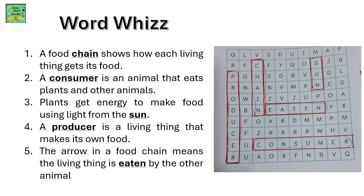Word whiz. A food chain shows how each living thing gets its food. A consumer is an animal that eats plants and other animals. Plants get energy to make food using light from the sun. A producer is a living thing that makes its own food. The arrow in a food chain means the living thing is eaten by the other animal.